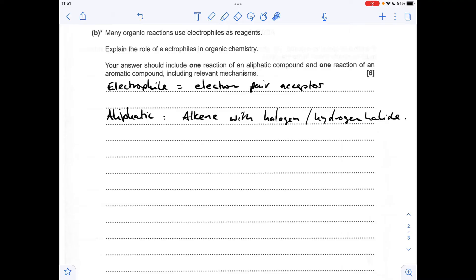So starting with the aliphatic example, obviously it's going to be an alkene. You could react it with a halogen, or you could react it with a hydrogen halide. Now I've gone for a hydrogen halide example, and I'm choosing HBr as my hydrogen halide. The other thing I want to say as well is keep things simple. So obviously ethene is the simplest alkene, so I'm going to use that. And it avoids the hassle later on in the mechanism of explaining major and minor products.